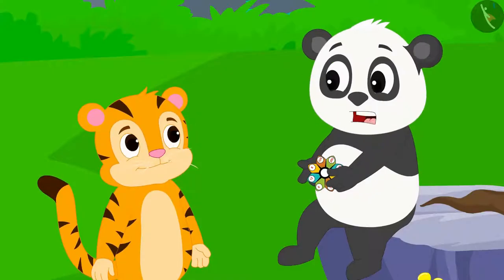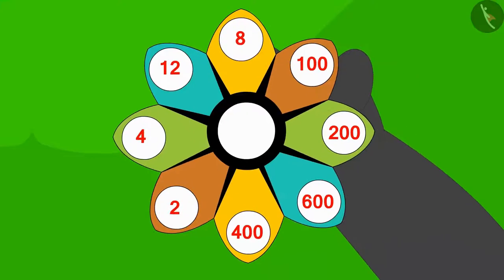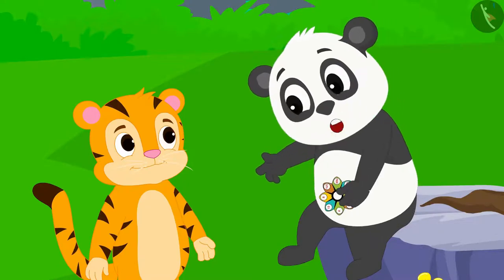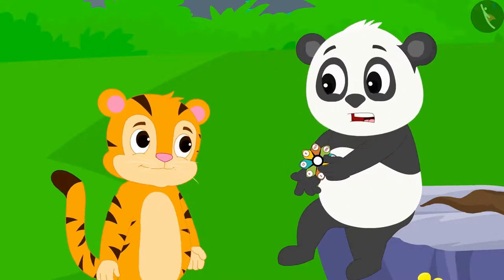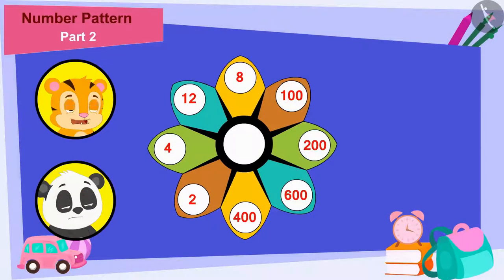Sher Khan, I bought this toy from the market. But to run it, I have to solve a math puzzle written on it. If you can help me solve it, we can both play with this toy together. Golu told Sher Khan. Okay, let's try to solve this. There are many numbers written here and there is only one blank space in the middle.